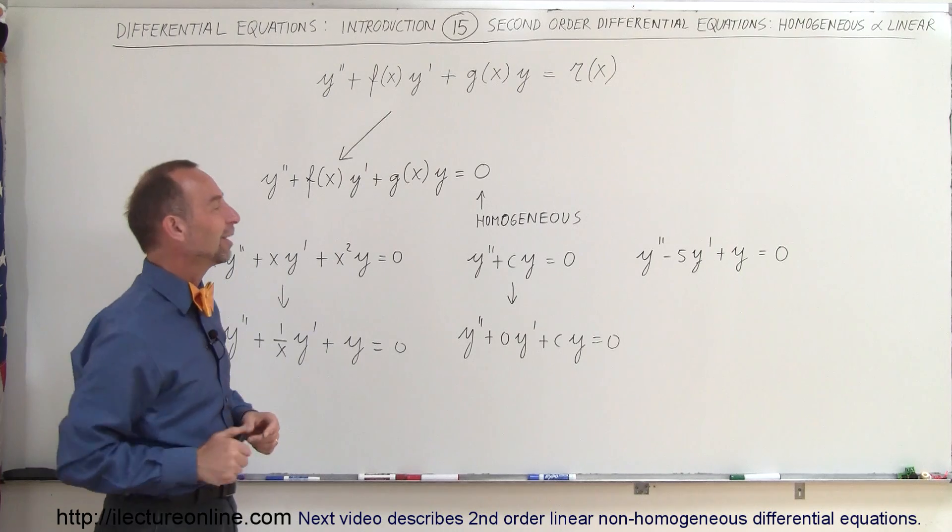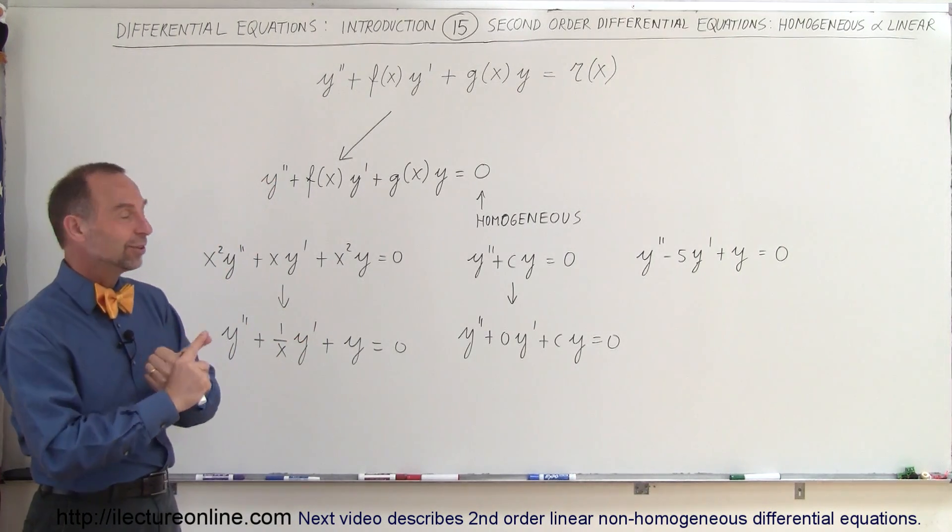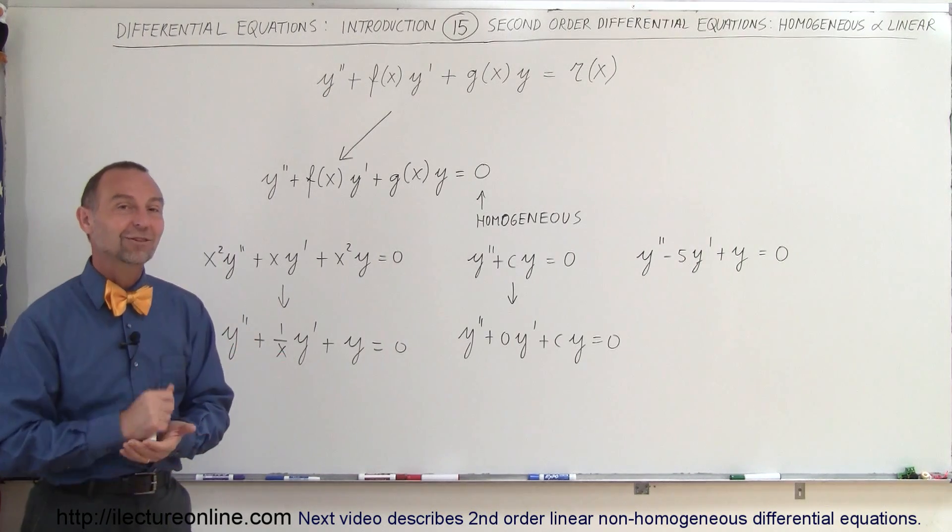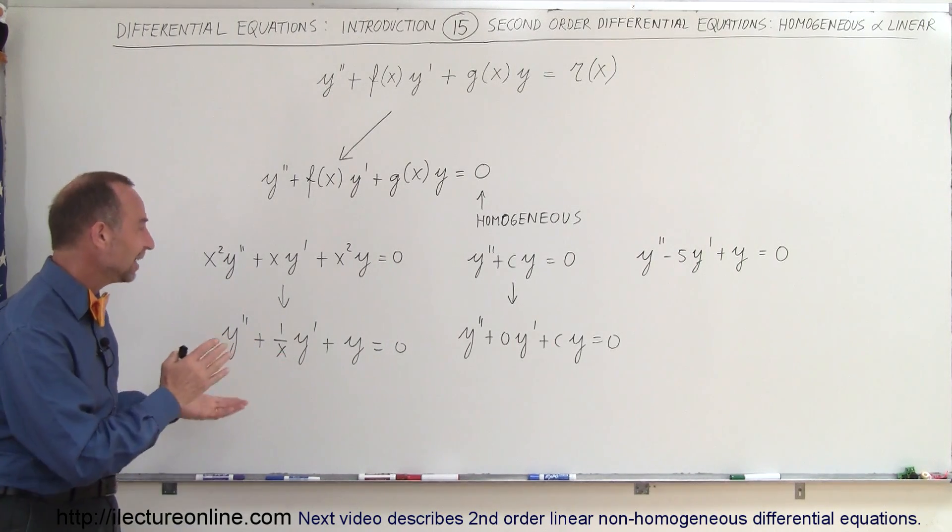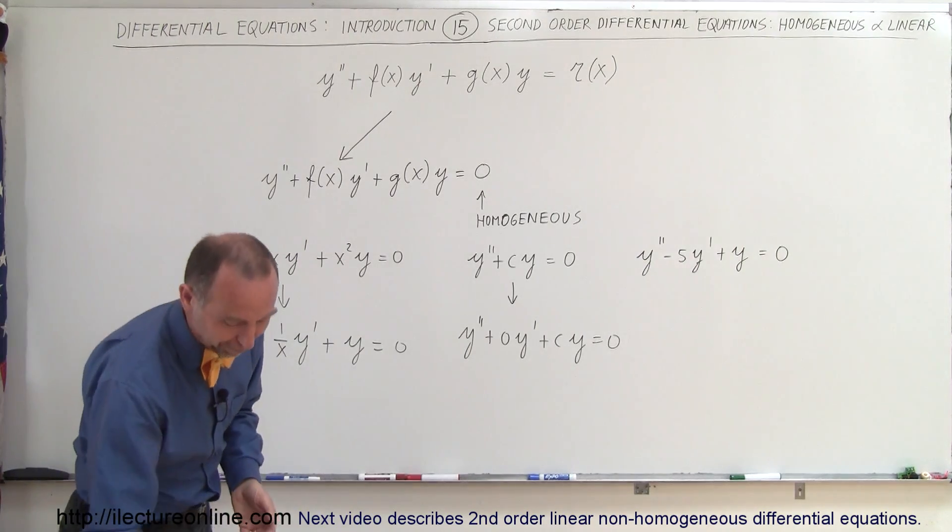I'm not quite sure if we put that in the right order or not, but at least we know what it is. So it's a second-order differential equation, it's homogeneous and it's linear all in one. And here's three nice examples of what that looks like. Thank you very much.